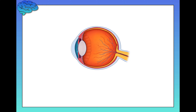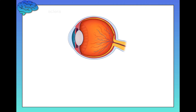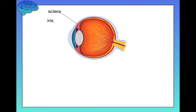Let's start with some basic anatomy. First, you have the sclera — this is simply the white part of the eye. Next, you have the iris, which is the colored part of the eye. If you have brown eyes or blue eyes or whatever, it's your iris that gives you that color.